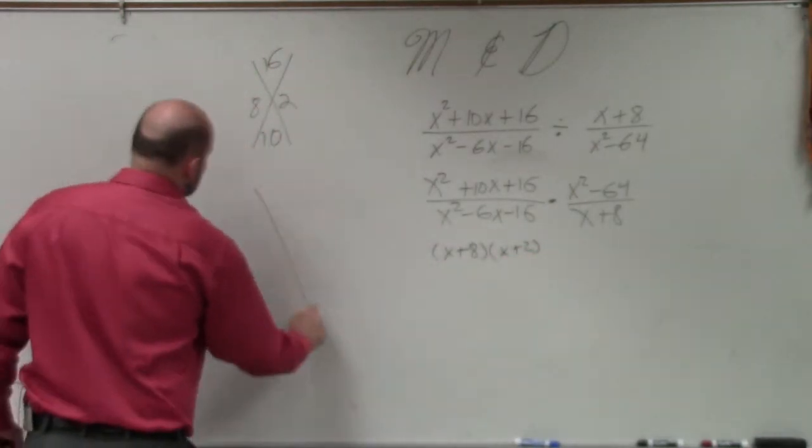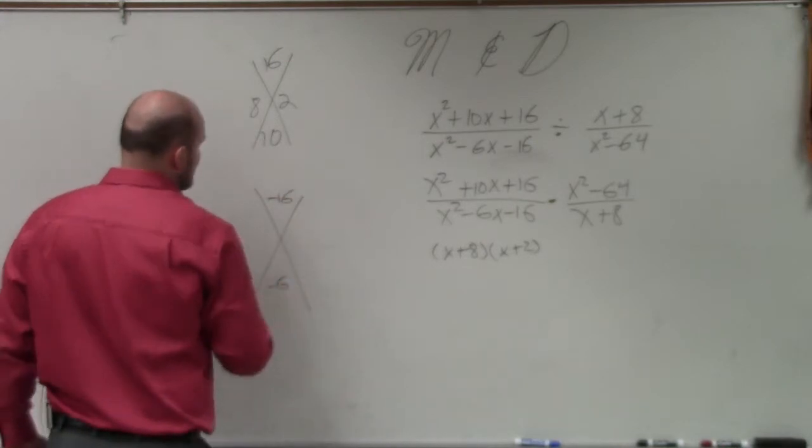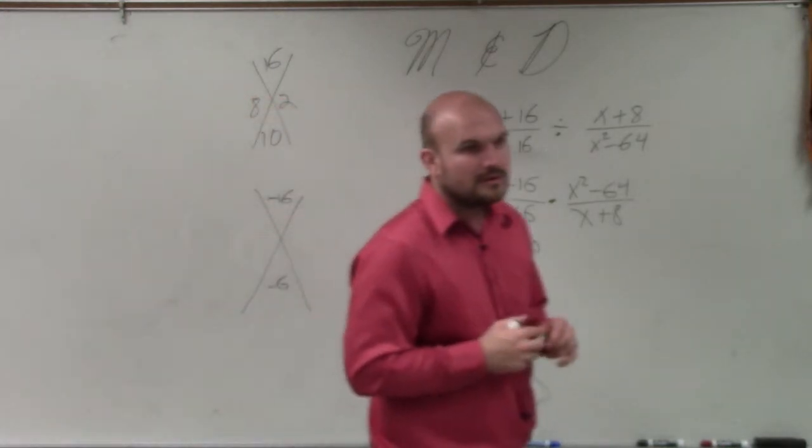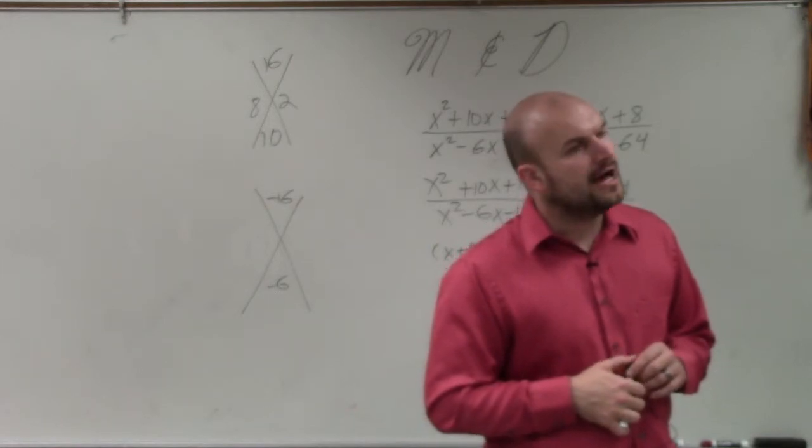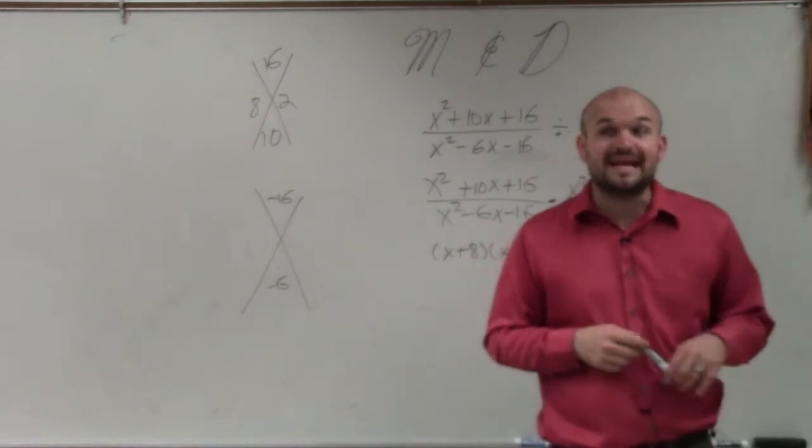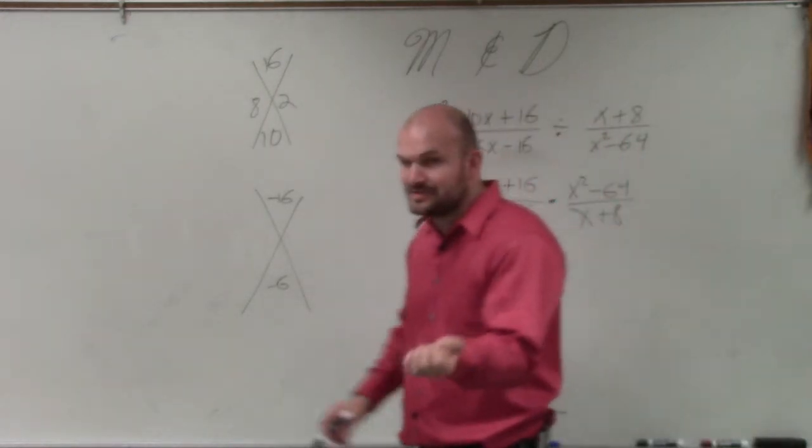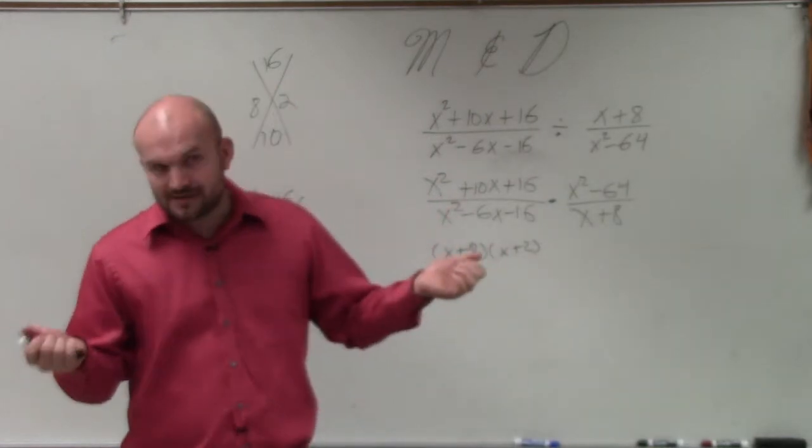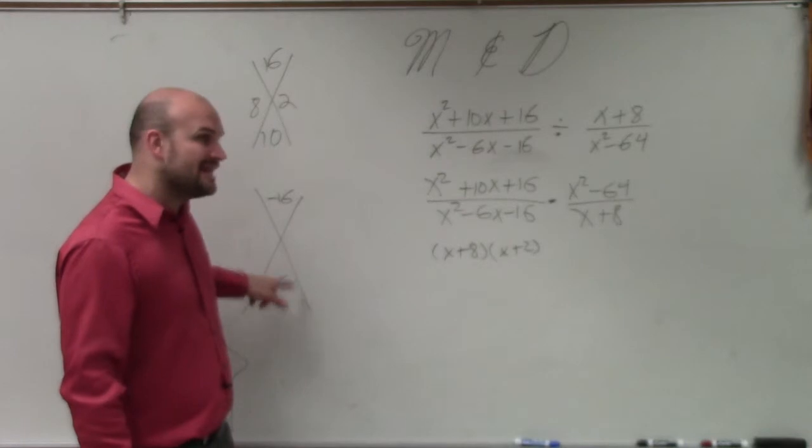Now let's go to the next one: negative 16 and negative 6. My two factors multiply to give me a negative number. If they multiply to give you a negative number, that means one of the factors has to be positive and one has to be negative. And if they add to give you a negative number, that means the larger of the numbers has to be negative.